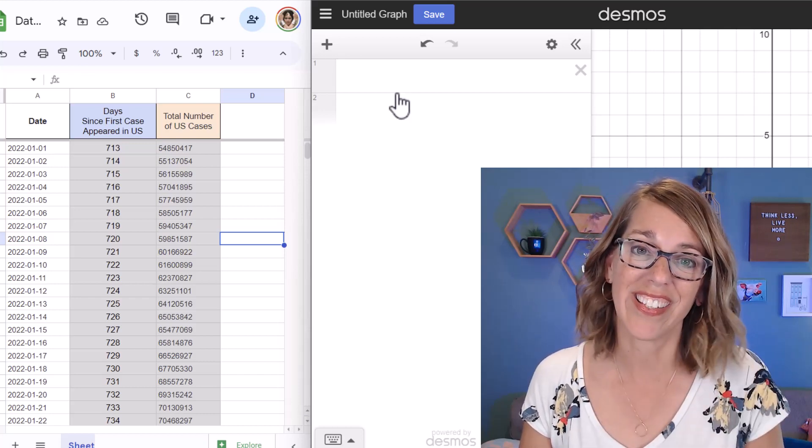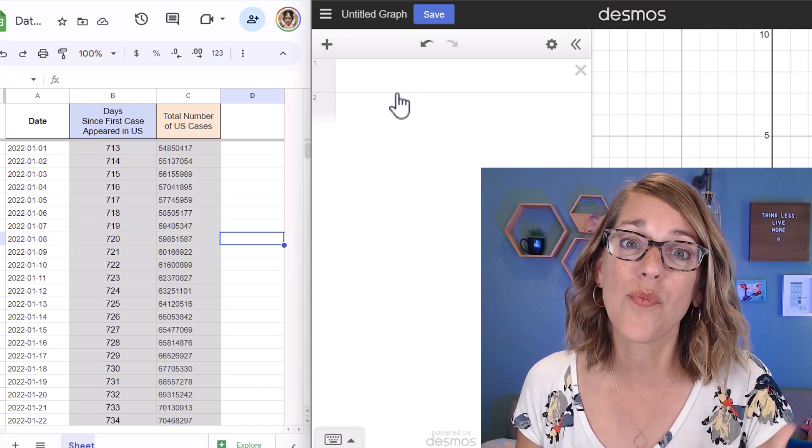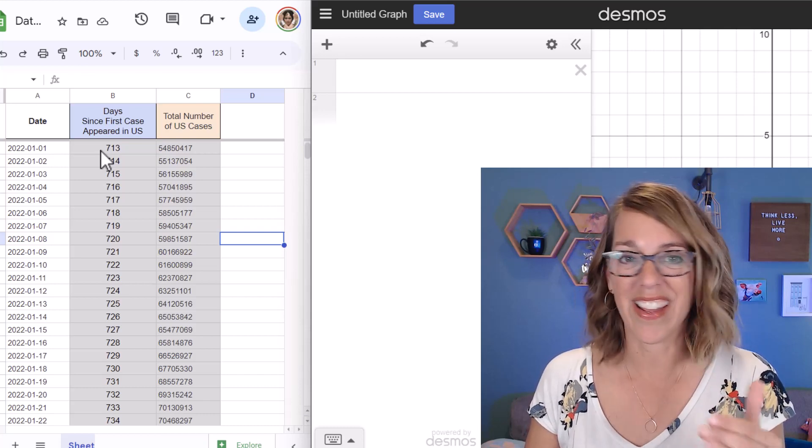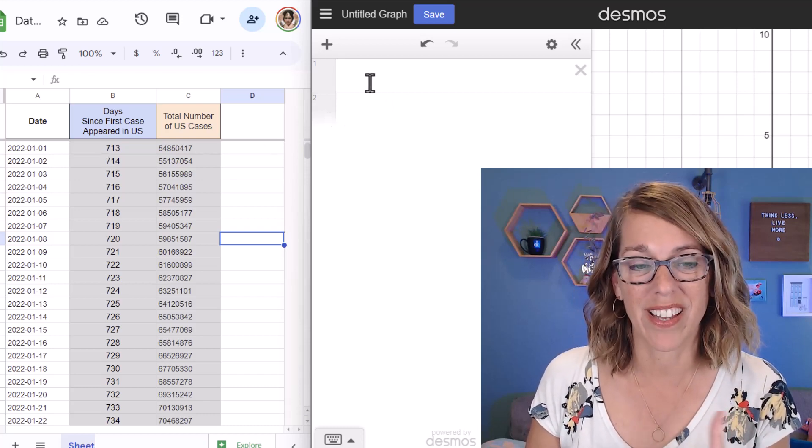There's a link to this data in my description if you want to follow along. The first thing that I want to do is to copy this data. I don't want to have to type it into Desmos.